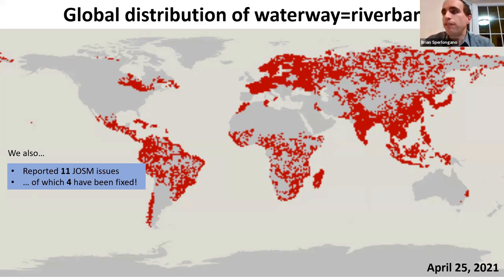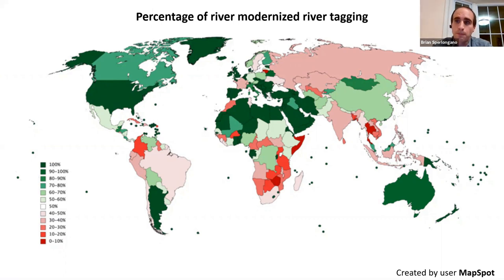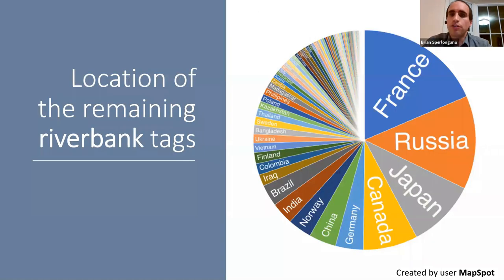A mapper working on the project created a visualization showing the split between water=river and waterway=riverbank tagging in every country: green means a higher percentage of river tagging and red means a higher percentage of riverbank tagging. This is a simple metric and not necessarily a reflection of mapper intent — the analysis is pretty skewed by single imports.